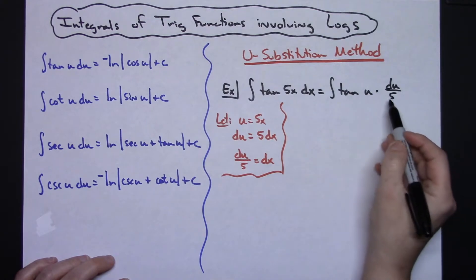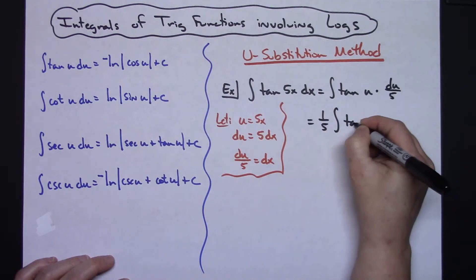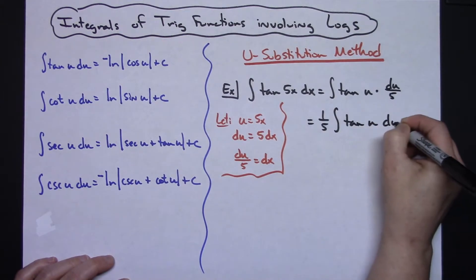Looking at that I can see I'm going to need to pull out a one-fifth, so I'm going to pull out one-fifth and then I'll be integrating tangent u du.